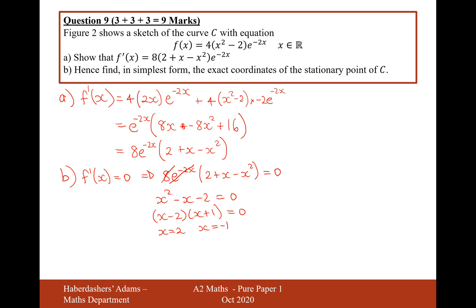Now we've got to go back and work out what the y value is. So when x equals 2, the y value is going to equal 4 times 2 squared. 2 squared is 4. 4 minus 2 is 2. And then it's e to the minus 4 because minus 2 times the x value of 2 is minus 4. So it's going to be 8e to the minus 4. So the first coordinate is going to be 2, 8e to the minus 4.